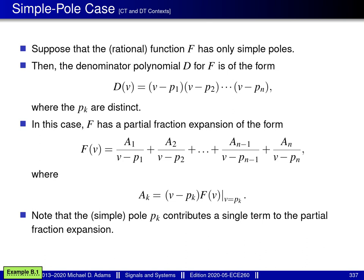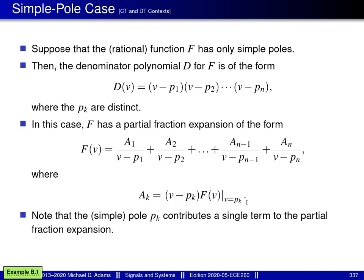First, let's consider partial fraction expansions for the simple pole case. Suppose that the rational function f has only simple poles. Then the denominator polynomial d of f is of this particular form here, where the pk are distinct. In this case, f has a partial fraction expansion of this particular form here, where the ak — in other words a1, a2, and so on up to an — are given by this particular formula here. Note that the pole pk contributes a single term to the partial fraction expansion.